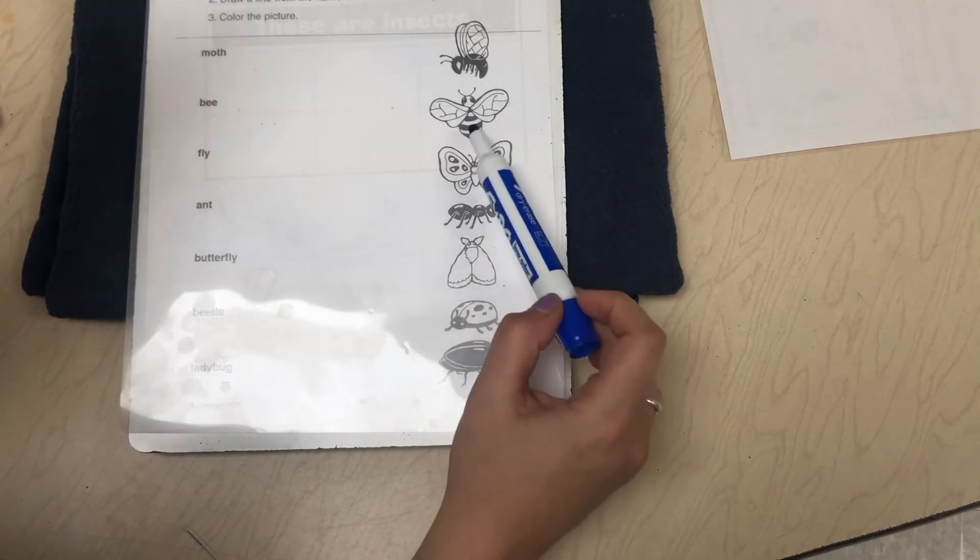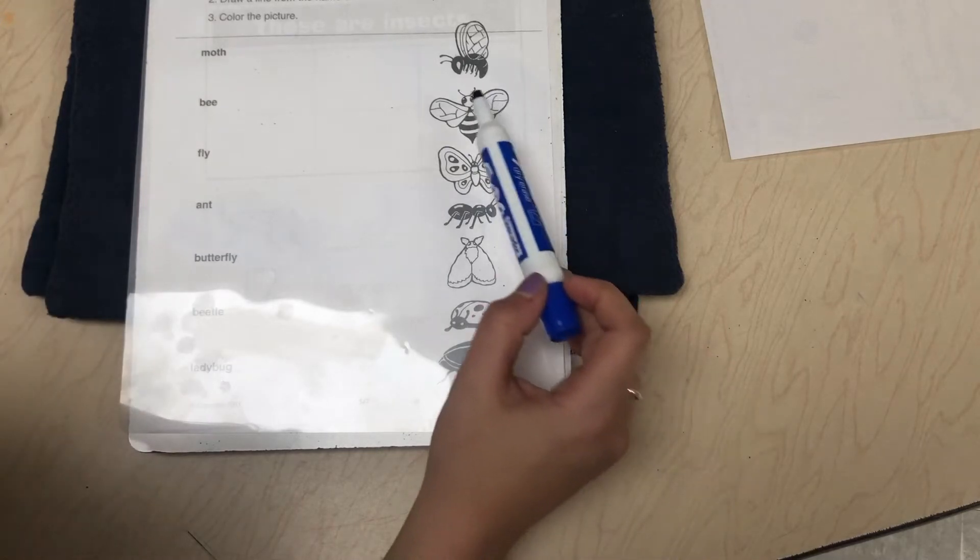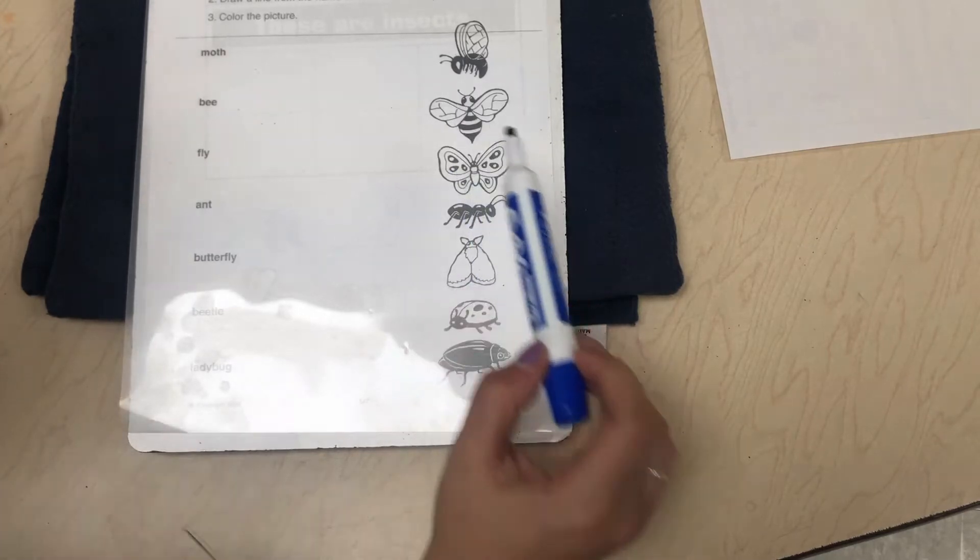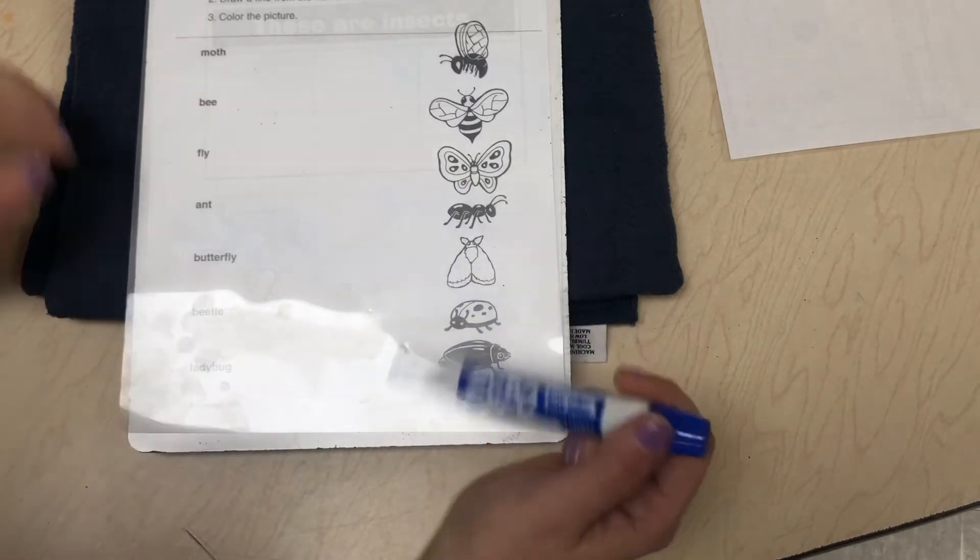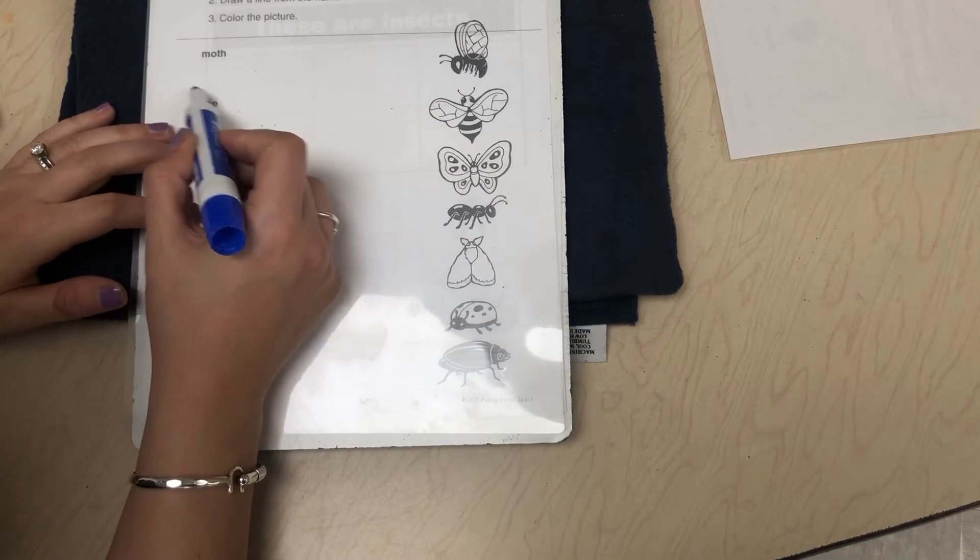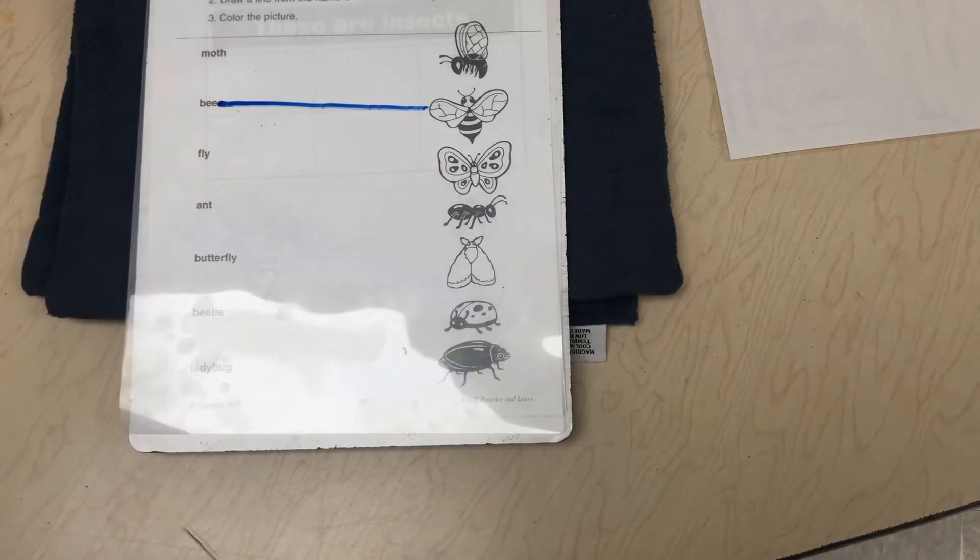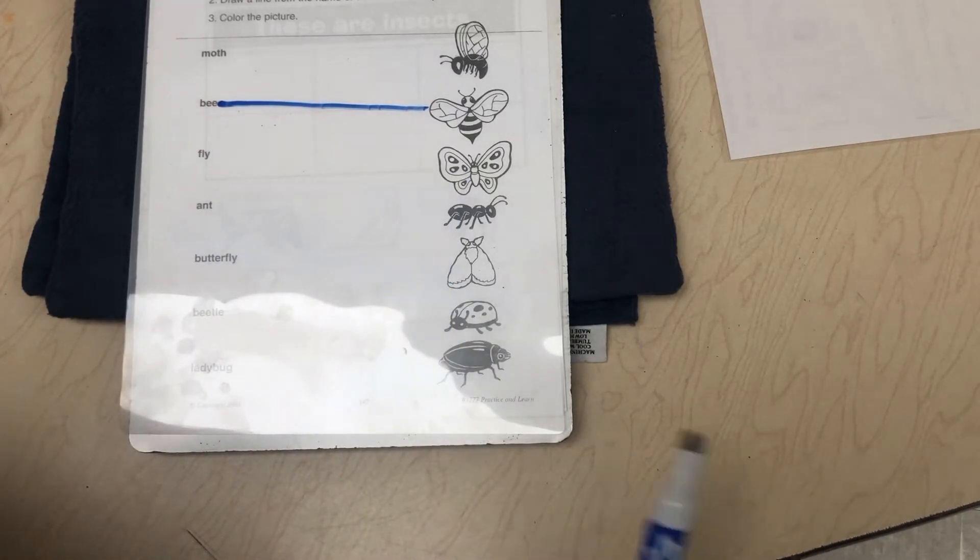Now this one has stripes, it has a stinger at the end with some wings, some antennas, so we are going to assume that that is a bee because the bee has the yellow and black stripes. So we are going to find bee over here, we are going to connect bee with the bee. Please follow along on the video or you can follow along with your day three science worksheet.